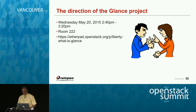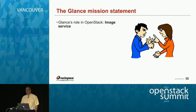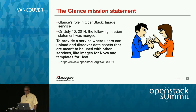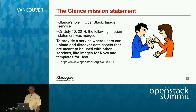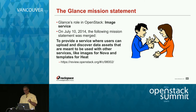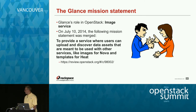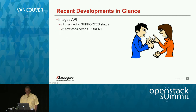The Glance mission statement is that Glance's role in OpenStack is the image service. On July 10th last year the mission statement was changed — Glance's official mission now is to provide a service where users can upload and discover data assets meant to be used with other services, like images for Nova and templates for Heat. It's a generalization of what exactly Glance catalogs, stores, and makes available to users.